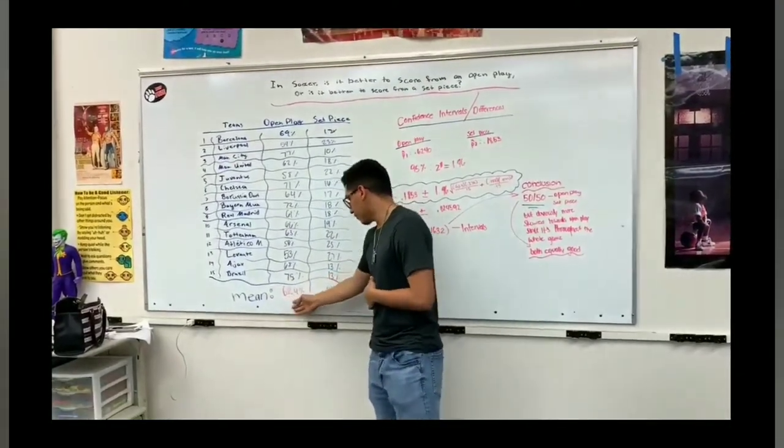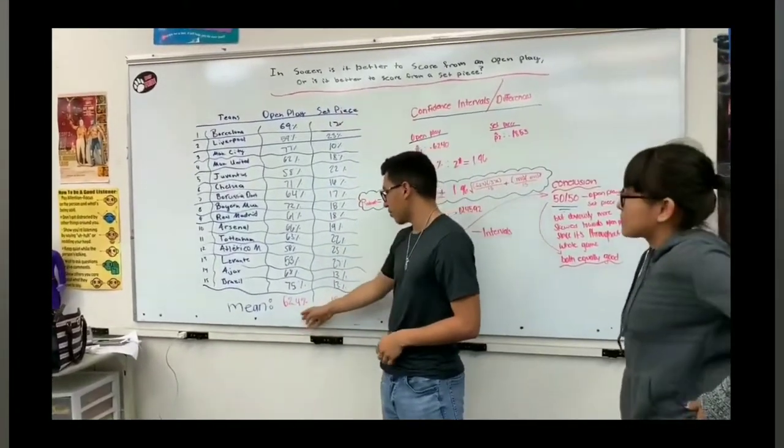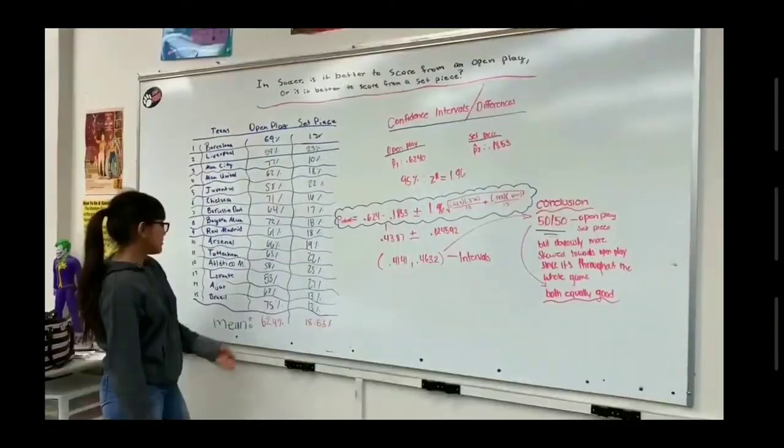And so, we found out the mean for both datasets. For the open play, it was 62.4%.